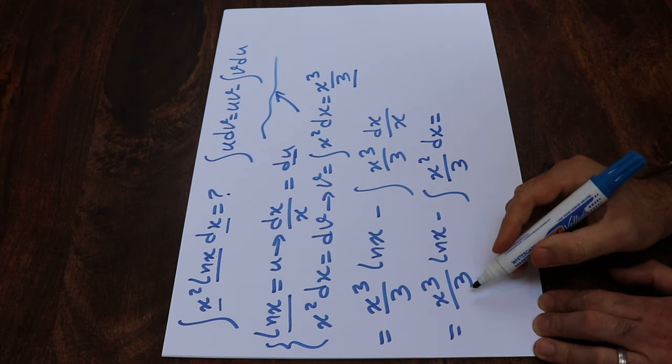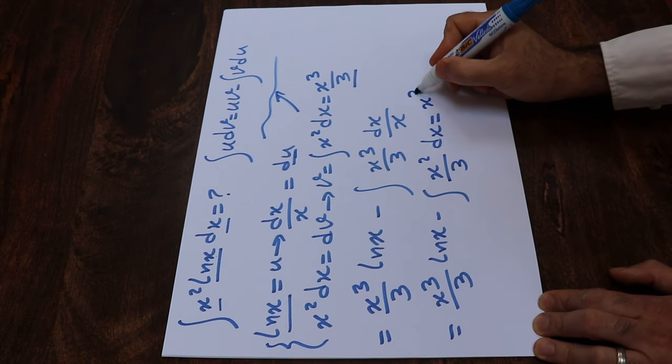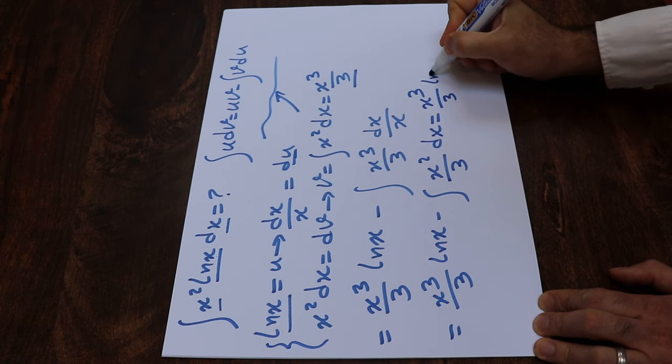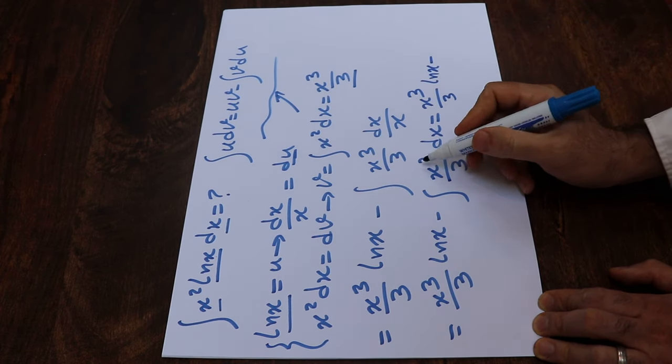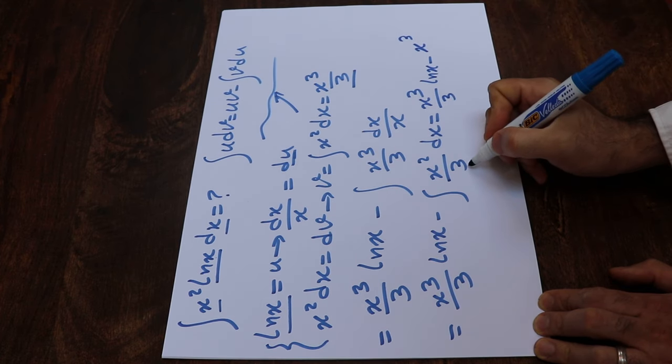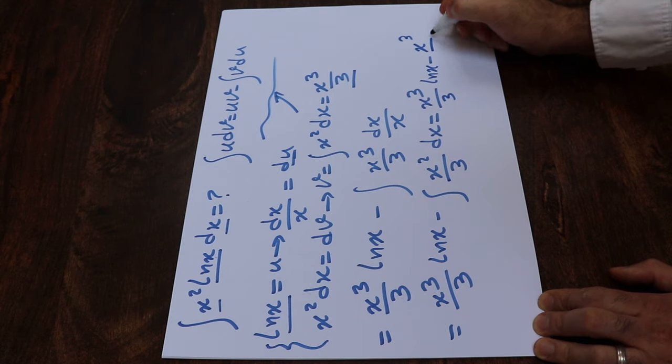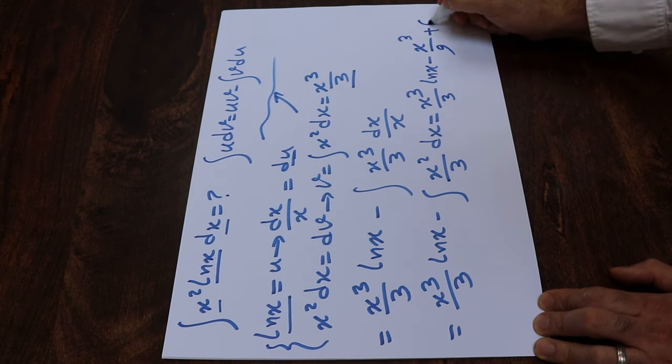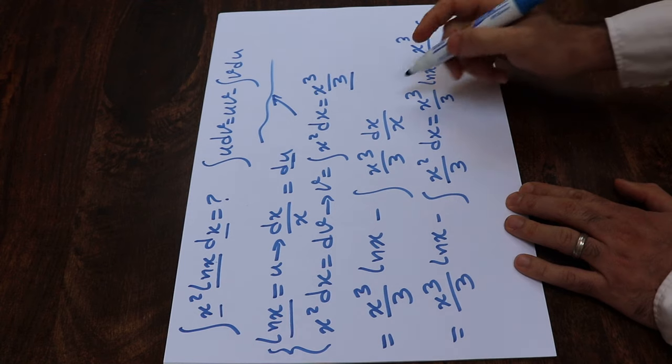And that integral we know is equal to x³ divided by 3 times ln(x) minus the integral of x² will be x³ divided by 3, and multiplied here by another 3 that will be divided by 9 plus c, which is the constant of the integral.